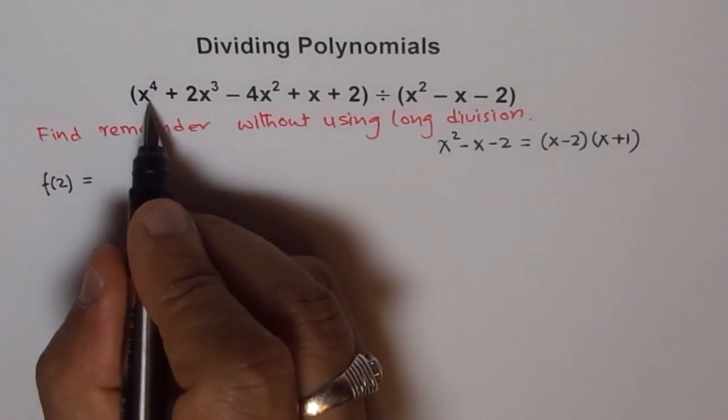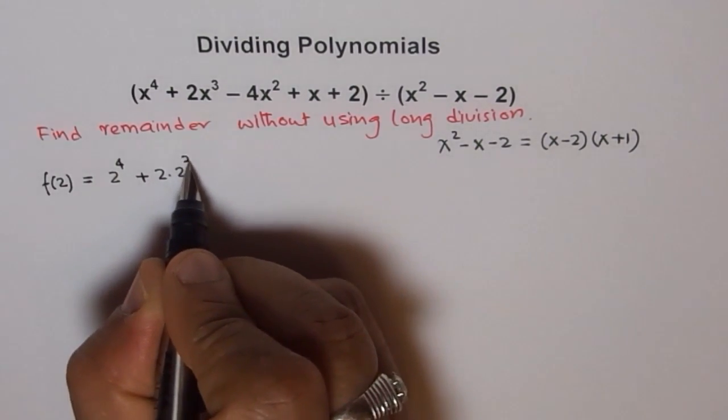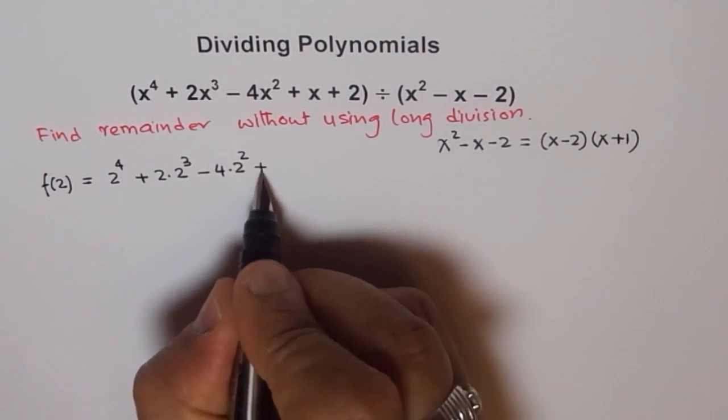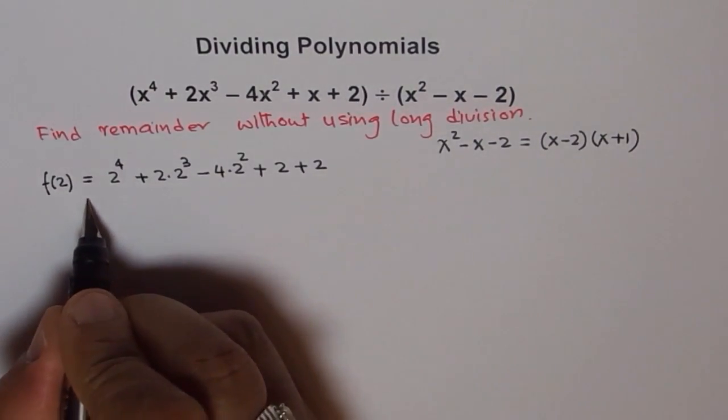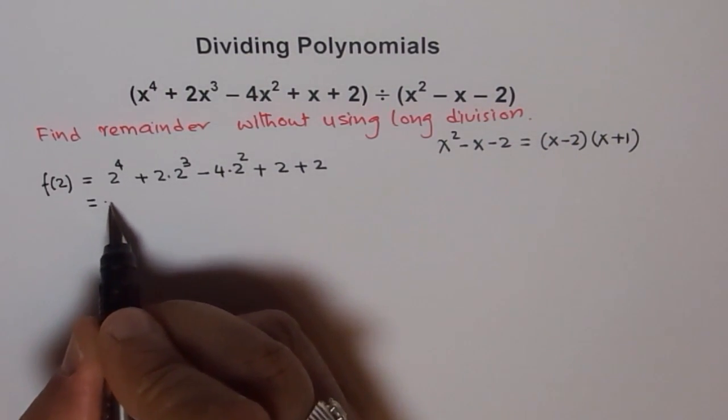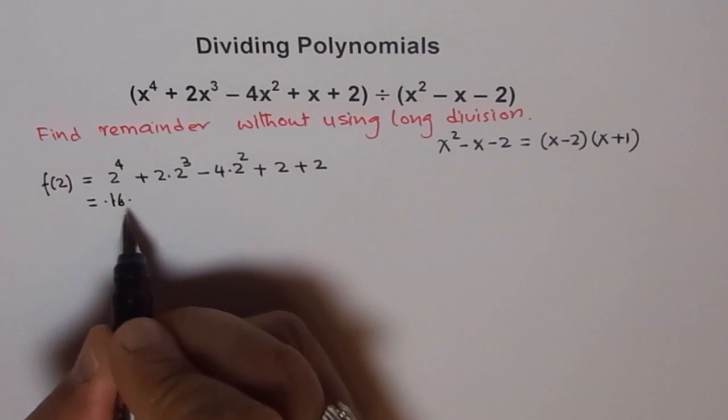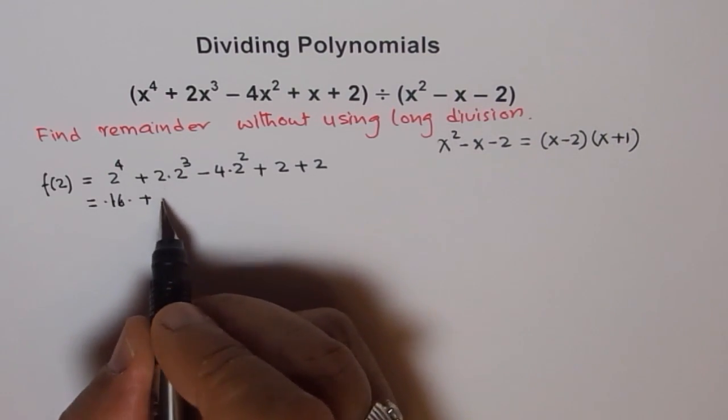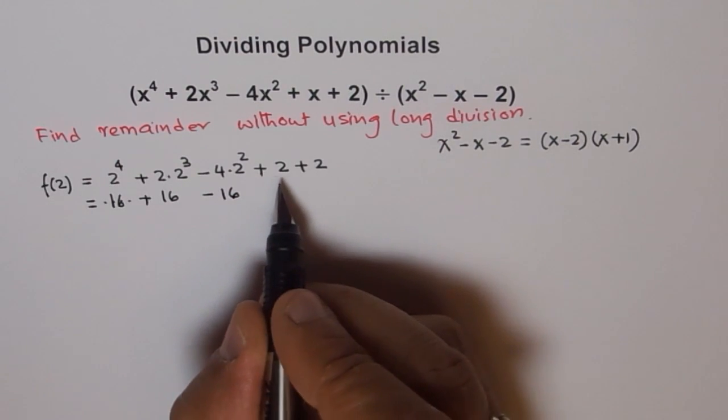So f(2) will be 2⁴ + 2(2³) - 4(2²) + 2 + 2. Which is equal to, 2⁴ is 16, this is also 2⁴, 2³ is 8 times 2 is 16. Now here, 2² is 4, 4 times 4 is also 16. So again, it's 16, plus 2, plus 2.